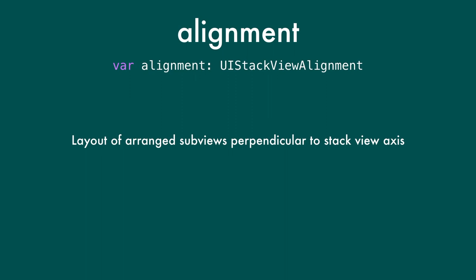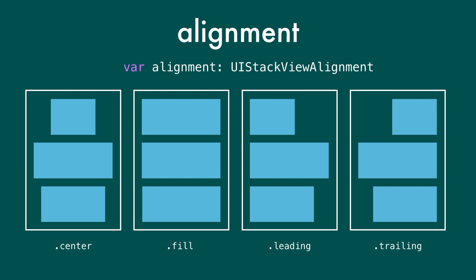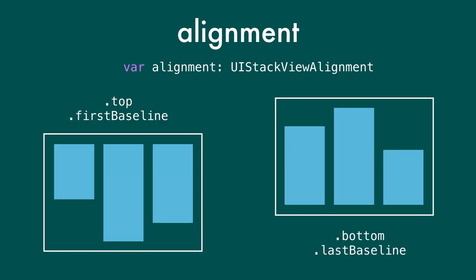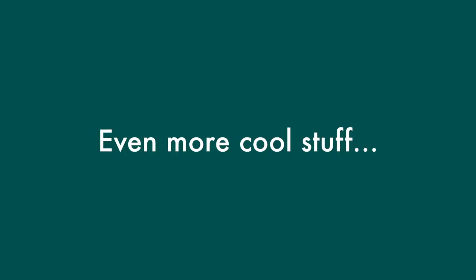There's an alignment property that controls how elements in the stack are aligned in the opposite direction of the axis. We can center elements, or fill will try to stretch them to fit the width in a vertical stack. Leading and trailing pin things to the leading and trailing edges, specific to vertical stack views. Top and bottom pin to those edges, specific to horizontal stack views. First and last baseline are for text-based UI Views like labels or text views, aligning the baseline of the first or last line of text. All of these properties can be set in storyboards as well.